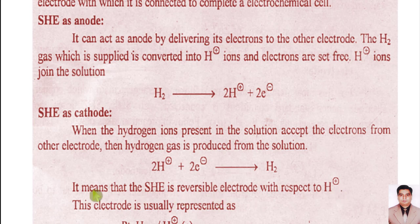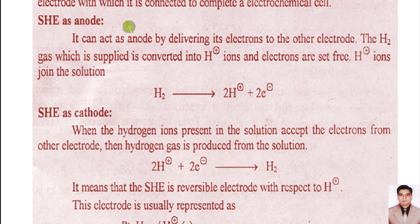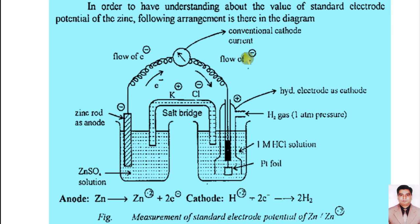The standard hydrogen electrode is a reversible electrode with respect to hydrogen ions. We can write this electrode as: Pt, H₂(g) | H⁺(C), where C means it is acting as cathode. The role of the standard hydrogen electrode both as anode and as cathode is very interesting, because there are very few electrodes which behave as both anode and cathode.